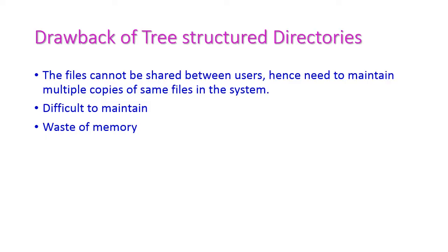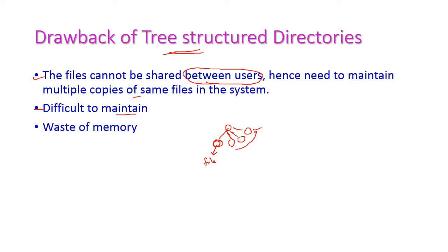The drawback of the tree structure directory is that files cannot be shared between users. If multiple users want the same file, sharing a single file is not possible, so a separate copy must be maintained for each user. If any changes are made to a file in one directory, those changes are not reflected in the copies in other directories, making maintenance very difficult. Also, replicating the same copy across all directories wastes memory.